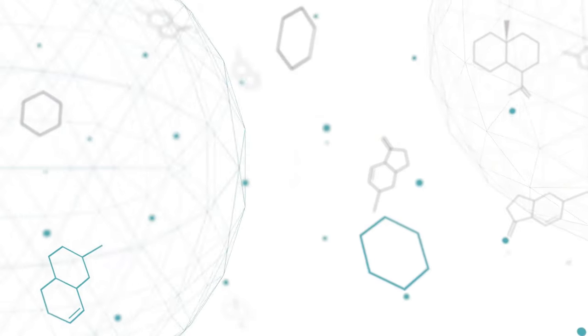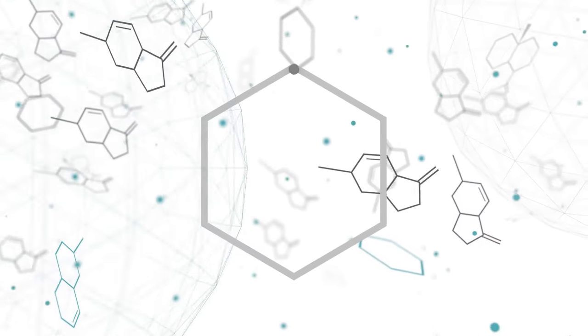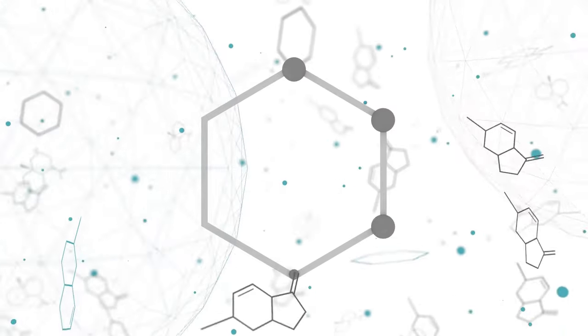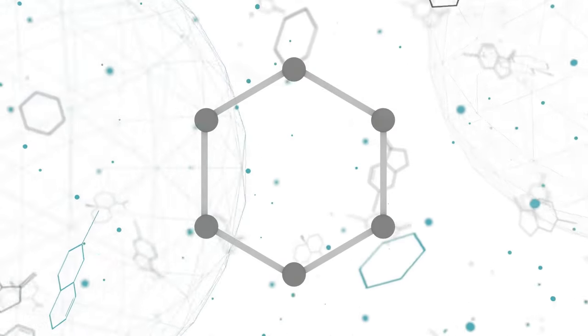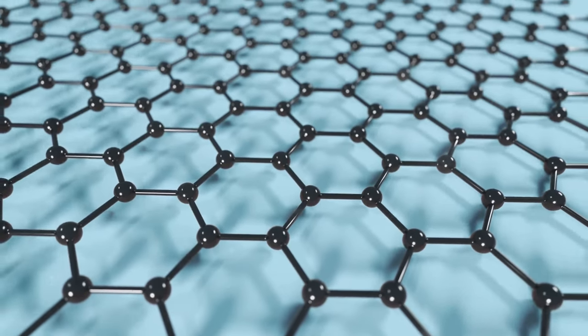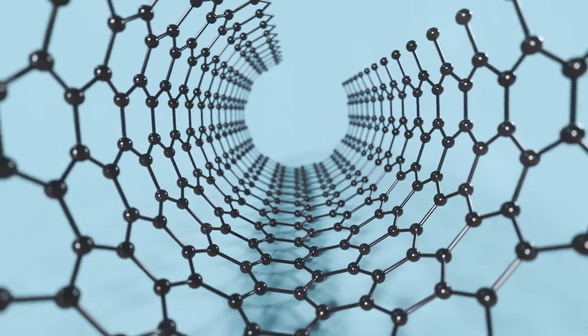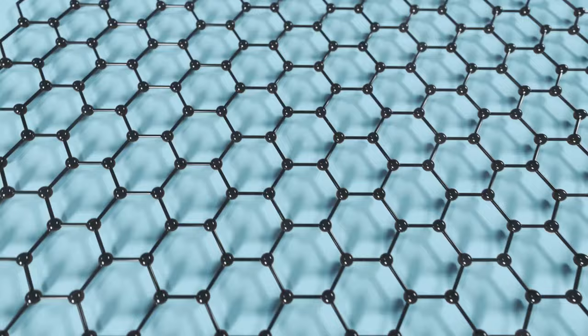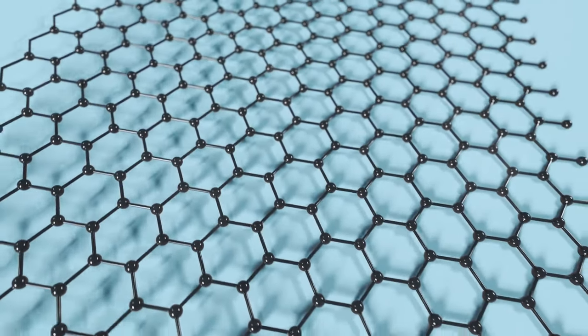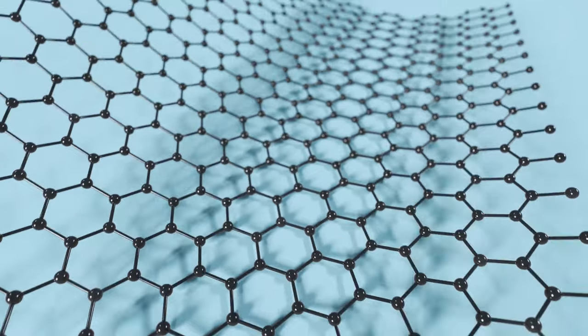Enter graphene. This single layer of carbon atoms arranged in a two-dimensional honeycomb lattice has properties that could blow silicon out of the water. First up, it's about a hundred times more conductive than silicon, meaning that electrons can move significantly faster through graphene. This could translate to faster processing speeds and more efficient power usage, a dream come true for tech enthusiasts everywhere.